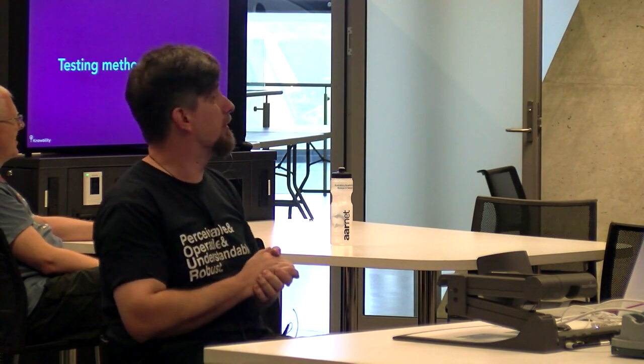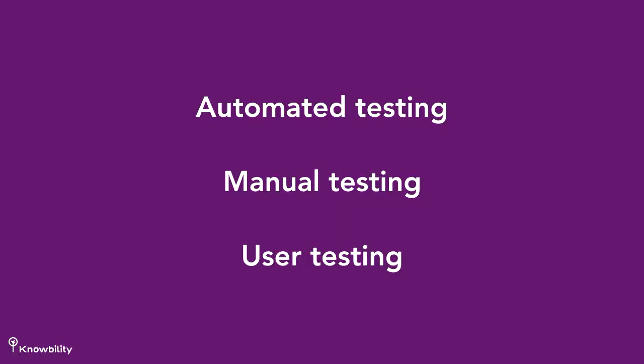Before I get into the nitty-gritty, any questions about the overview? We're going to talk today about automated testing, a whole lot about manual testing, and a little bit about user testing — the three areas important for accessibility testing.